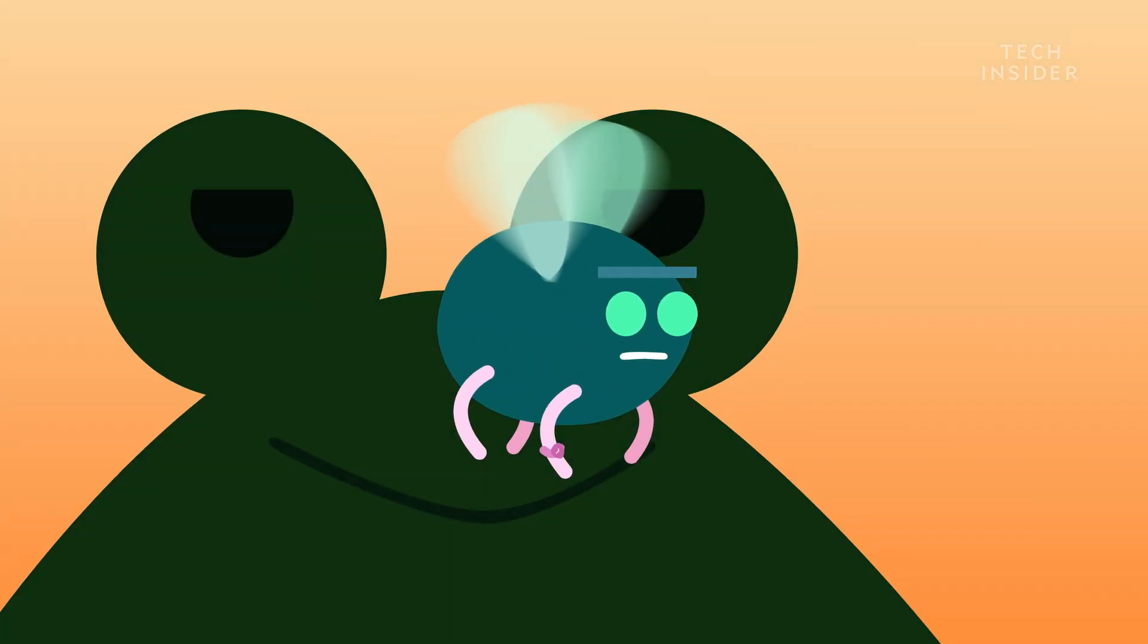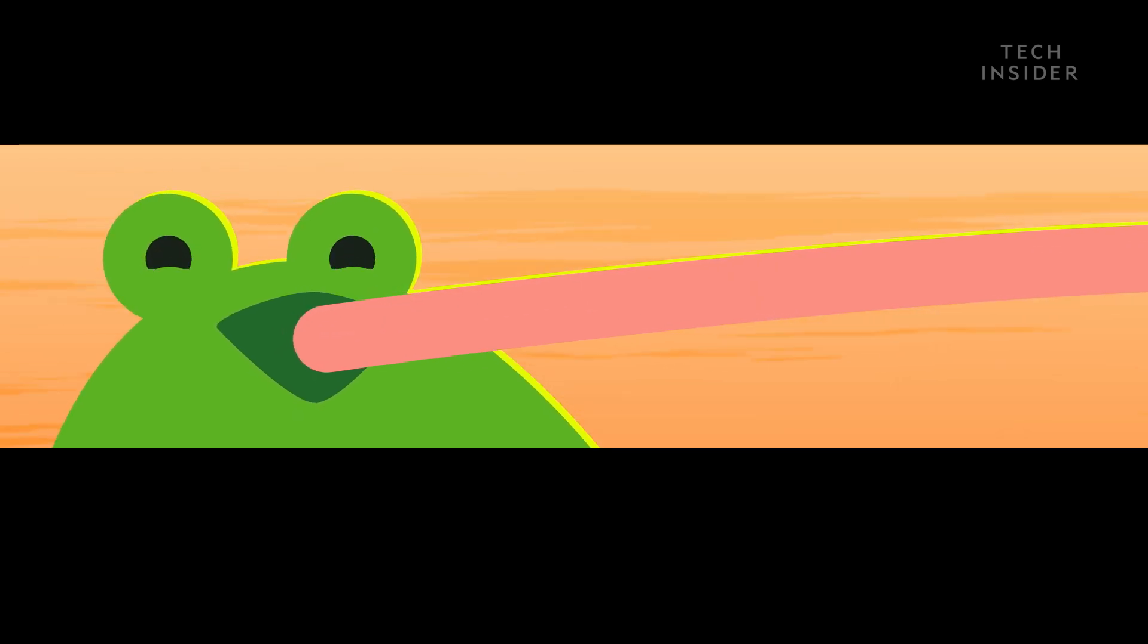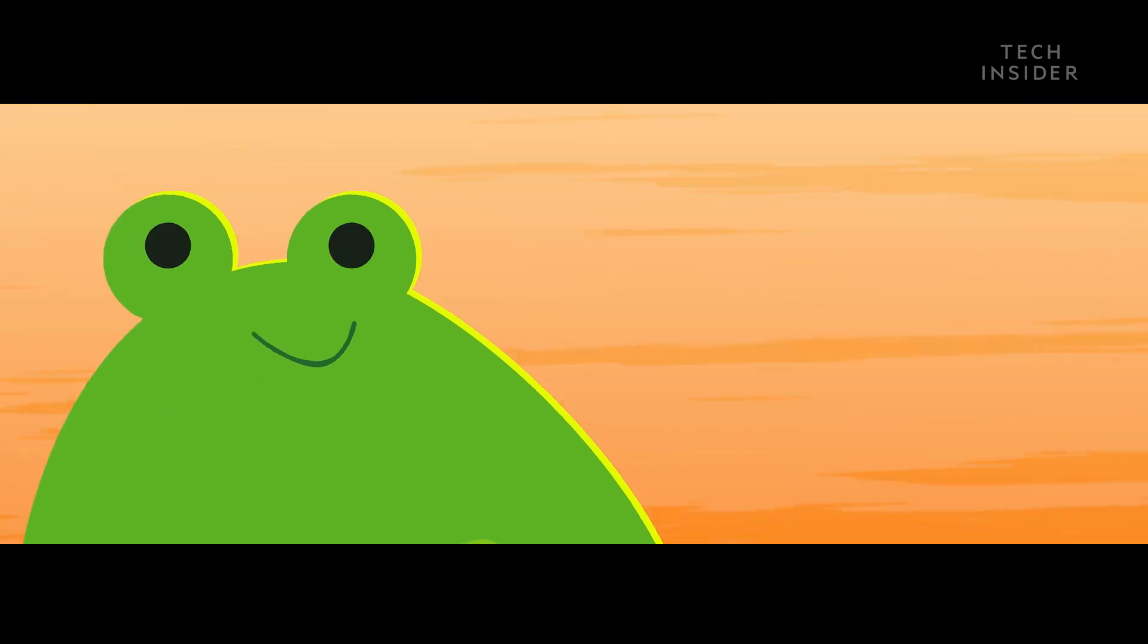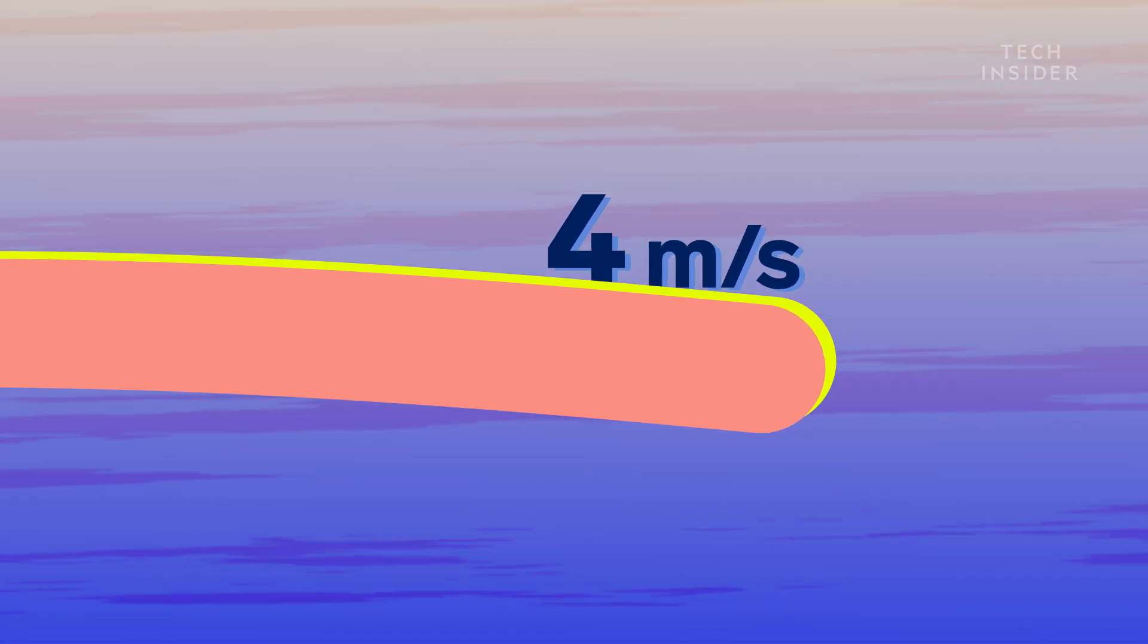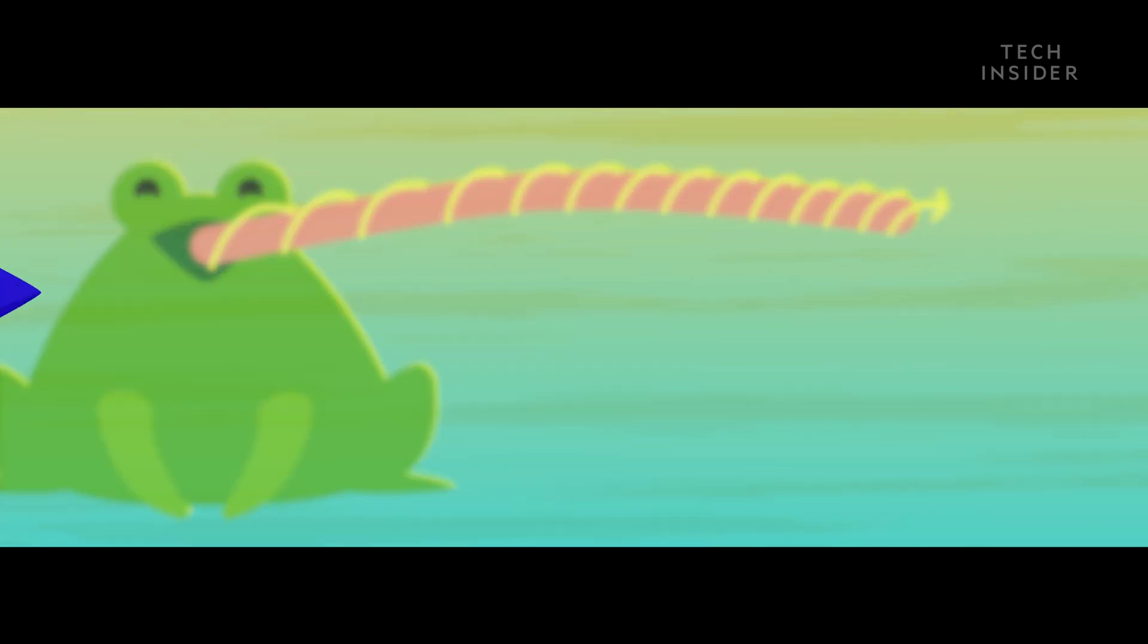Well, frogs have a trick up their sleeve. An ultra-fast tongue. Their tongue is made of two powerful muscle groups, an extender and a retractor. The extender fires the tongue towards its prey at an astounding 4 meters per second. At the same time, the frog flicks its jaws open, which rotates the tongue as it fires, like a speeding bullet.